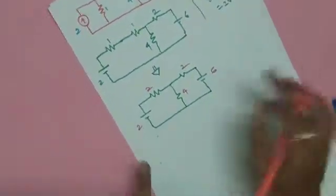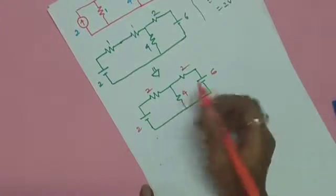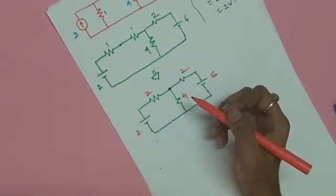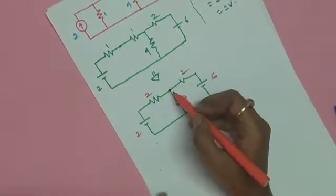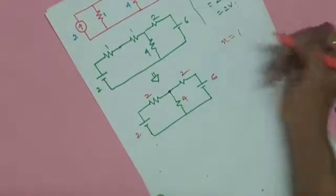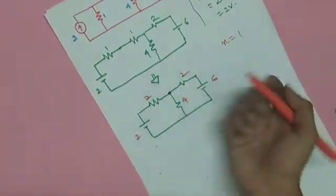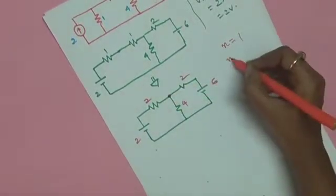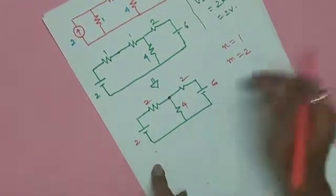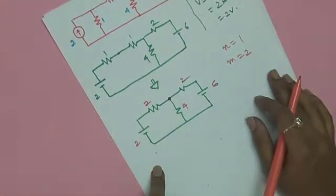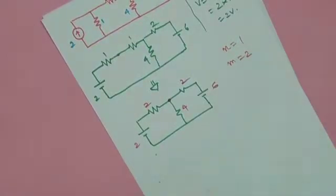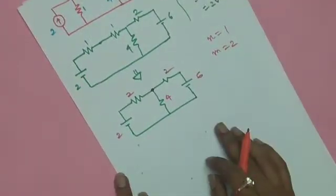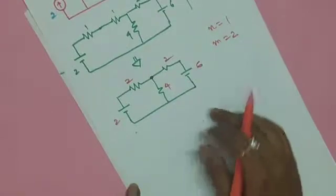Now you can see that there are two meshes in this circuit and one principal node. In nodal analysis we consider principal nodes — here there is just one principal node, so we need to apply nodal analysis at only that one point. Since there are two meshes but only one principal node, nodal analysis is simpler here as it involves only one equation.